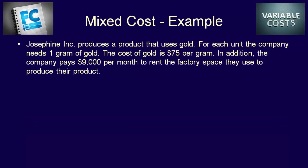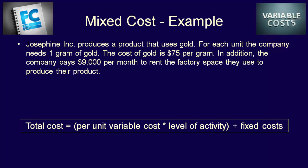Let's look at an example. Josephine Inc. produces a product that uses gold. For each product, the company needs one gram of gold, and the cost of gold is $75 per gram. In addition, the company pays $9,000 per month to rent the factory space. We can use our mixed cost formula — total mixed cost equals (variable cost per unit × level of activity) plus fixed costs — to calculate the cost at different levels of activity.